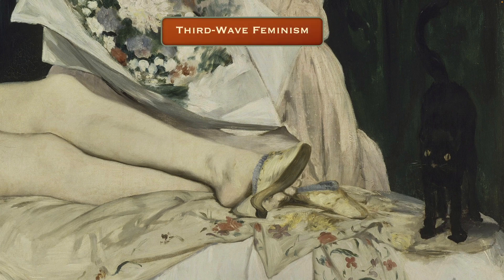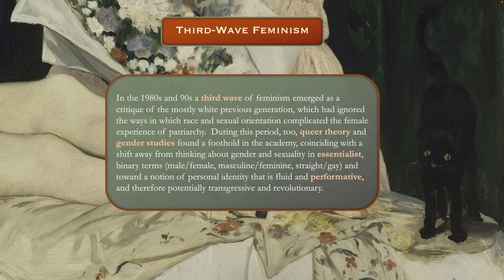Finally, we're going to talk about the third wave of feminism. This began in the 1980s and 1990s as a critique of the mostly white previous generation of second wave feminists, which had ignored the ways in which race and sexual orientation complicated the female experience of patriarchy. During this period, queer theory and gender studies found a foothold in the academy. This coincided with a shift away from thinking about gender and sexuality in essentialist binary terms — male, female, masculine, feminine, straight, gay — and toward a notion of personal identity that is fluid and performative.